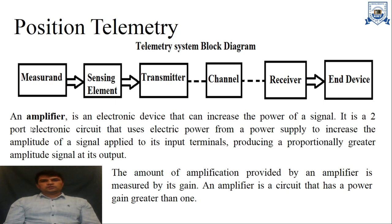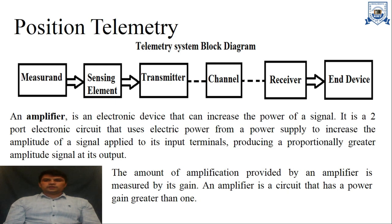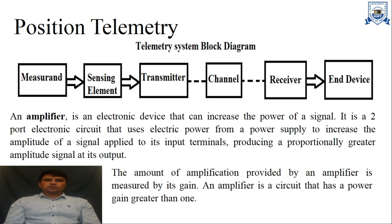In this system we have an amplifier. An amplifier is an electronic device that can increase the power of a signal. It is a two-port electronic circuit that uses electric power from a power supply to increase the amplitude of an applied signal, producing a proportionally greater amplitude signal at its output. The amount of amplification provided by an amplifier is measured by its gain. An amplifier is a circuit that always has a power gain greater than one.